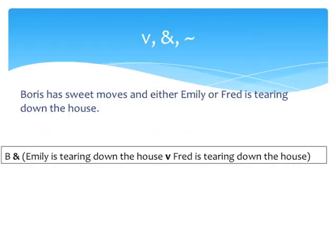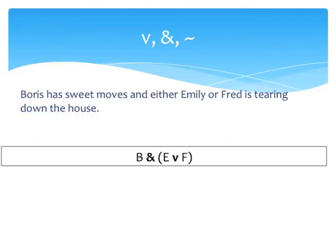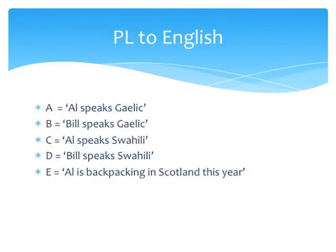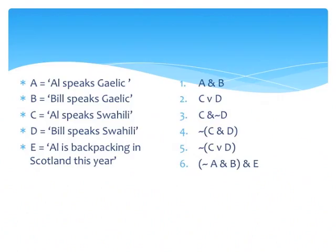Now suppose that we invert the procedure — that is, we have propositional logic sentences and we want to know how they translate into English. Suppose you have this key: A corresponds to 'Al speaks Gaelic,' B corresponds to 'Bill speaks Gaelic,' and so on. Suppose we have the PL sentences to the right — what do they say in English? Sentence 1 is simply A and B joined by an ampersand. A is 'Al speaks Gaelic,' B is 'Bill speaks Gaelic,' and the ampersand corresponds to AND. So what sentence 1 says is 'Al speaks Gaelic and Bill speaks Gaelic,' or more naturally, 'Al and Bill speak Gaelic.'